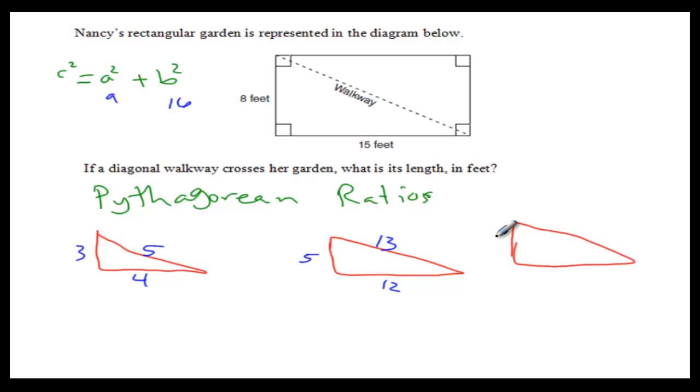The last one is if this one is 8 feet or 8 inches, 8 centimeters, this one is 15, the hypotenuse is 17. Those are the three ratios you need to memorize.